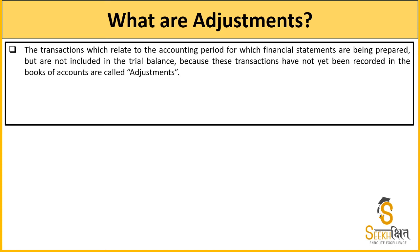Adjustment वो कोई भी चीज़ हो सकती है जिसका treatment सही नहीं हुआ। Suppose आपने कोई transaction include नहीं की अपनी books prepare करते हुए, लेकिन वो इसी period से relate करती थी — तो वो adjustment करनी पड़ेगी। Definition यह है: the transactions which relate to the accounting period जिसकी हम financial statements prepare कर रहे हैं, लेकिन उनको हमने include नहीं किया — they have not yet been recorded — वो हमारा adjustment हो जाएगा।